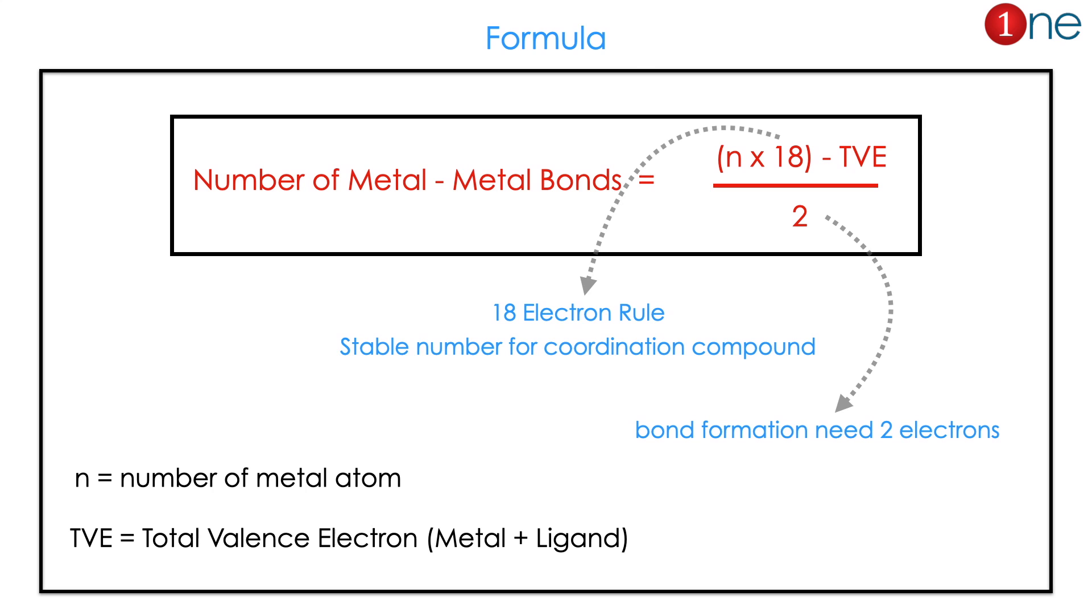n is the number of metal atoms. TVE is the total valence electrons, which is a combination of metal plus ligand. The 18 comes from the 18-electron rule, which is a stable number for coordination compounds. And 2 is because bond formation needs 2 electrons. That's how the formula is constructed.